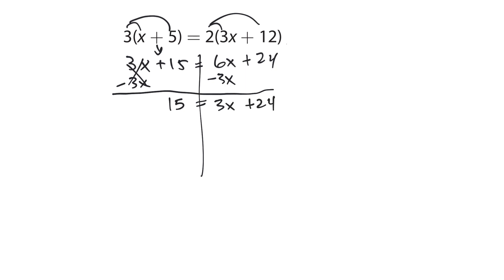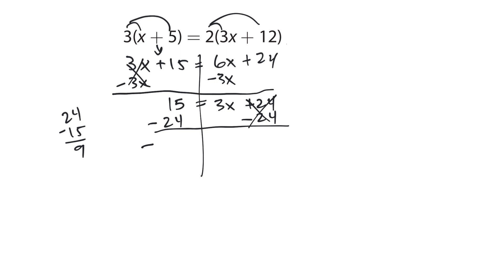I have 6x and 3x — I'll pick the smaller and subtract 3x from both sides. These cancel, giving 15 equals 3x plus 24. Subtract 24 from both sides — these cancel — and 15 minus 24 gives negative 9, so negative 9 equals 3x. Divide both sides by 3: x equals negative 9 divided by 3, which is negative 3.